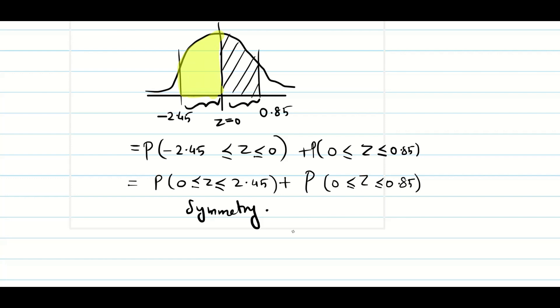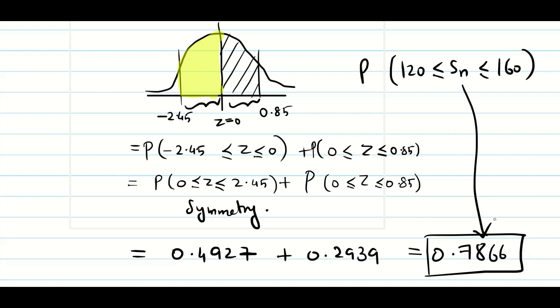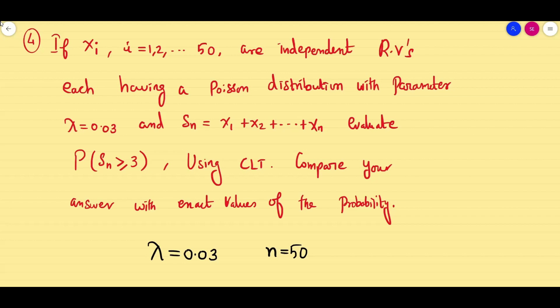Go to your table, find the value. It's going to be 0.4927. The other one is 0.2939. So 0.7866. The probability of getting the value between 120 to 160 is going to be 0.7866.